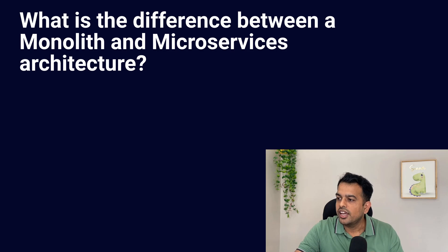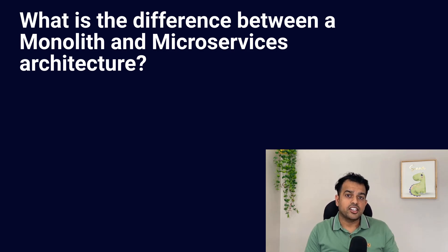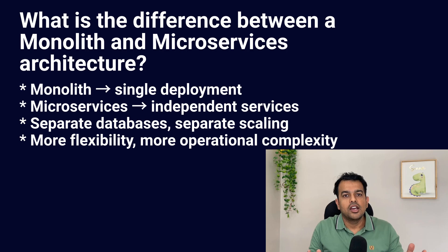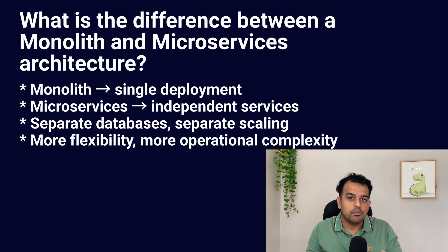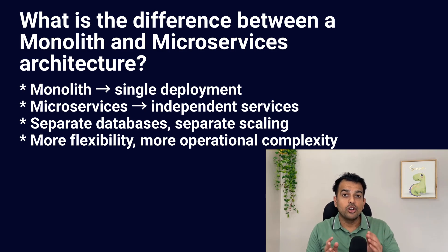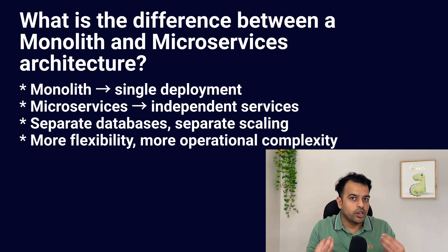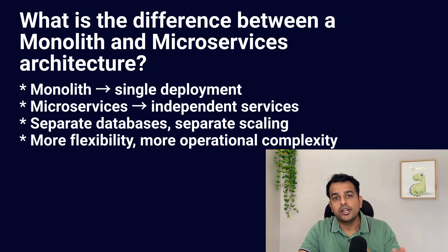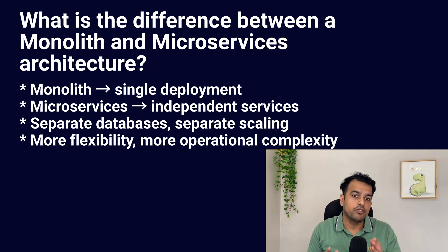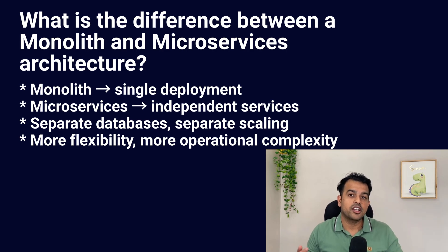What is the difference between a monolith and microservice architecture? In monolithic architecture, the entire project is one big codebase — all modules like user, authorization, service, and payment sit inside the same deployment. Microservices, on the other hand, break this into smaller, independent services. Each service has its own logic, database, and deployment lifecycle. This gives flexibility in choosing language and database per service, but also adds complexity especially around communication and monitoring between multiple microservices.